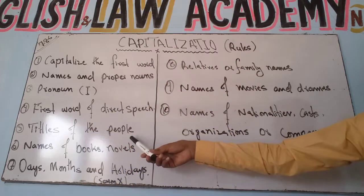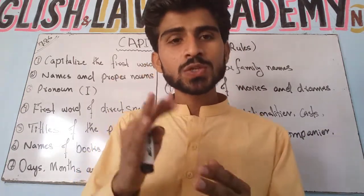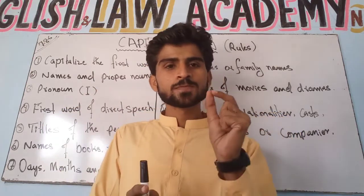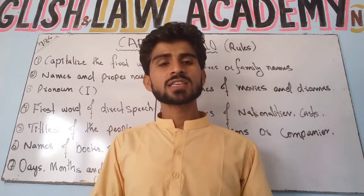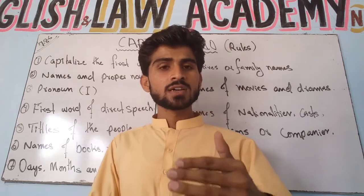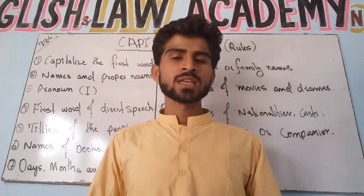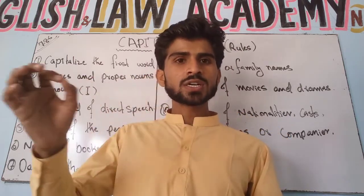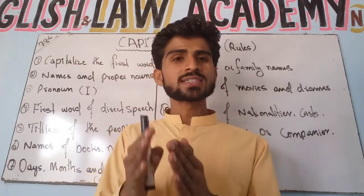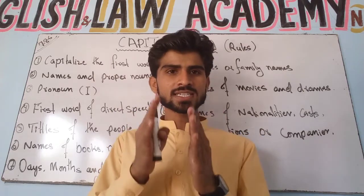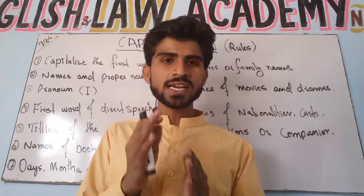Rule five is about titles of people. Whenever you write a title, you must write the first letter of that title in capital form. For example, 'Advocate Amjit B. Rind Baloch' — the A of Advocate is capital. Or 'Dr. John' — the D of Doctor must be in capital form. Whatever the title, always capitalize its first letter.